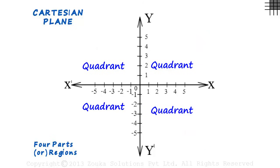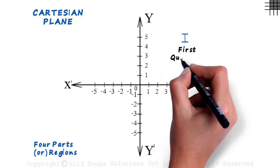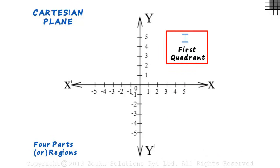The quadrants are named in a particular order which we have to strictly follow. This region is the first quadrant. In the first quadrant, as we can see, the X as well as the Y coordinates are positive.